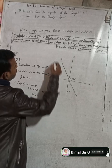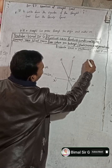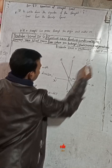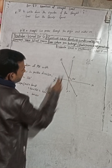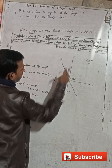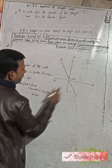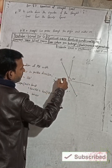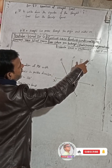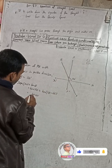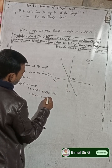Now use the CAST rule. CAST tells us that in the second quadrant — 180 minus 60 degrees places us in the second quadrant — only sine is positive and all others are negative. So tan will be negative: minus tan(60°), which equals minus root 3.